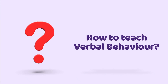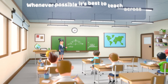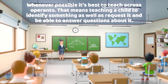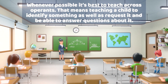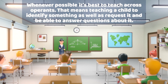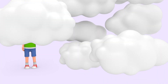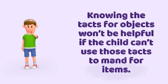How do you teach verbal behavior? Whenever possible, it's best to teach across operants. That means teaching a child to identify something as well as request it and be able to answer questions about it. Knowing the tacts for objects won't be helpful if the child can't use those tacts to mand for items.